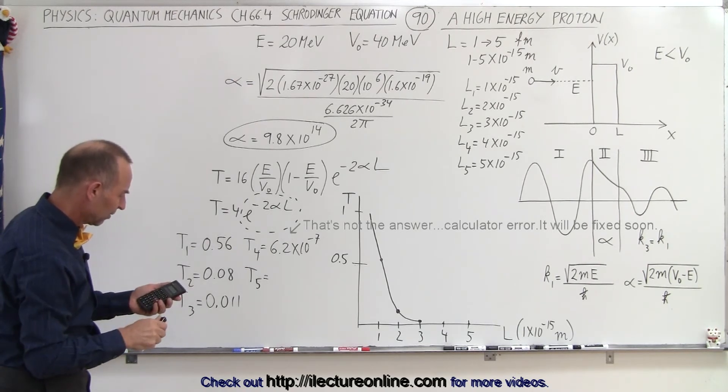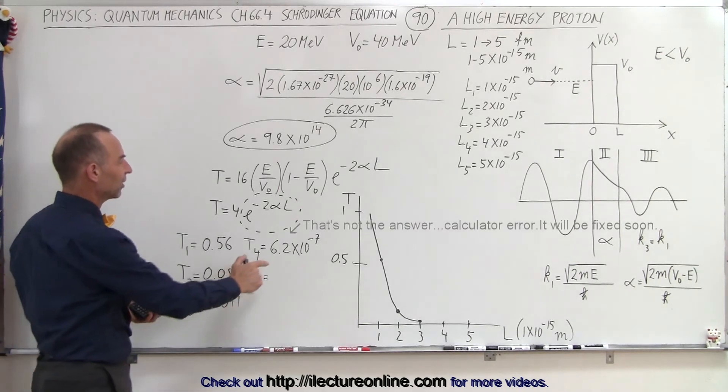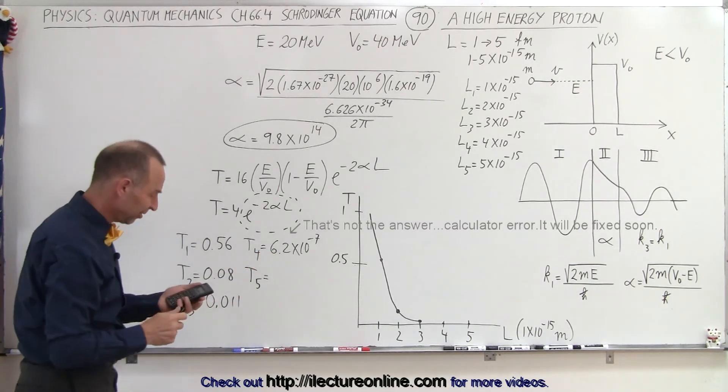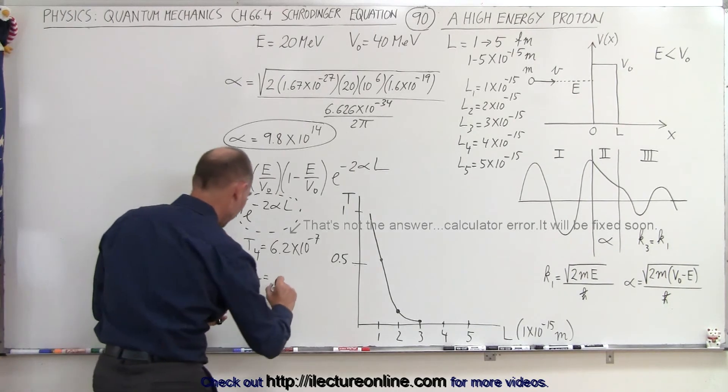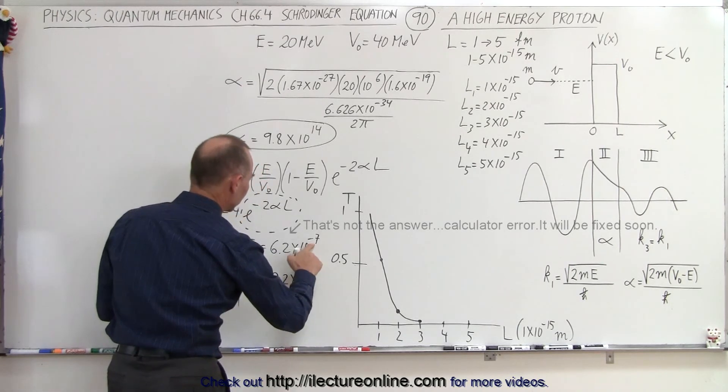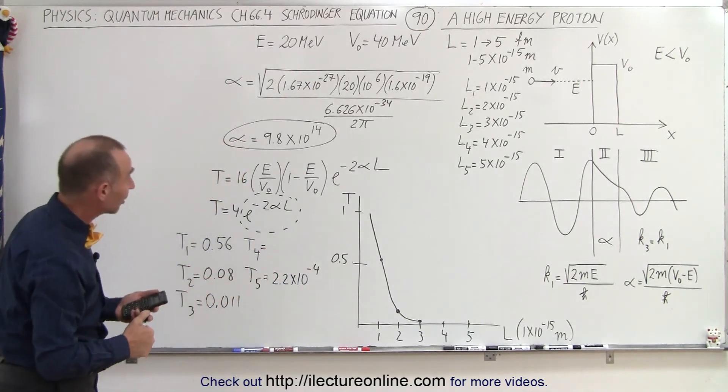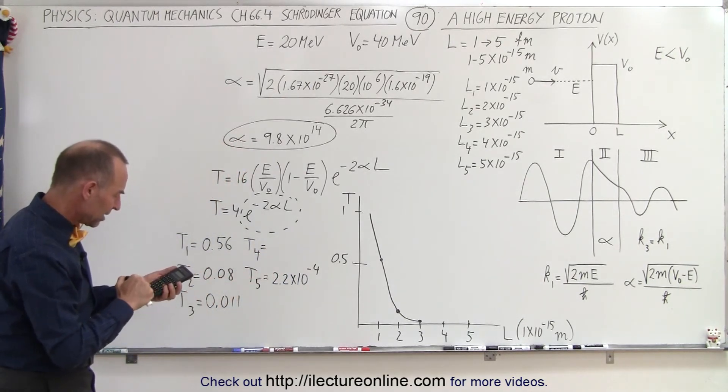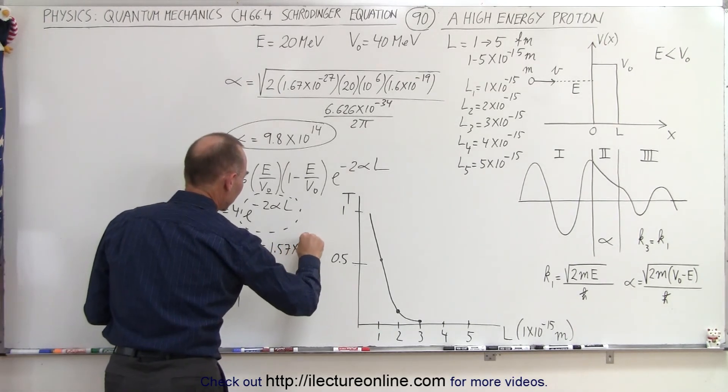And I get, ooh, times 4. I think I made a mistake on this one, because this looks like the correct number that I have. 2.2 times 10 to the minus 4. So I'm going to do this one again, because I have the feeling that I got the wrong number there. So let's try that. 9.8 e to the, so 1.57 times 10 to the minus 3.